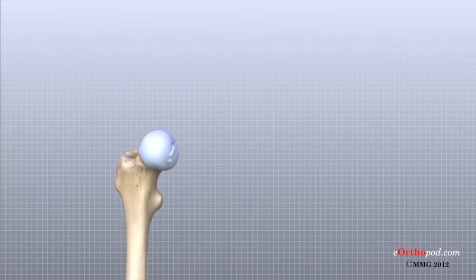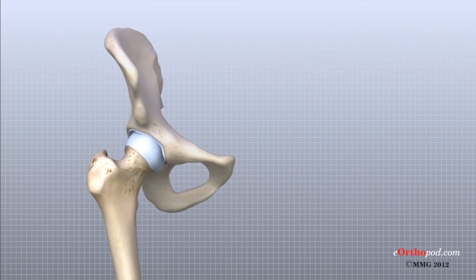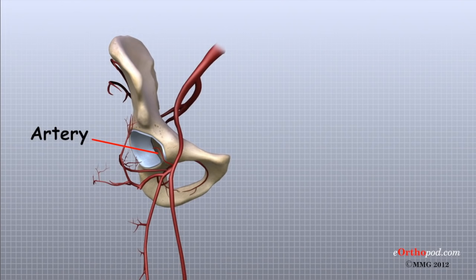A small ligament connects the very tip of the femoral head to the acetabulum. This ligament, called the ligamentum teres, doesn't play a role in controlling hip movement like the main hip ligaments. It does, however, have a small artery within the ligament that brings a very small blood supply to part of the femoral head.